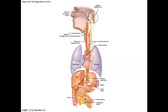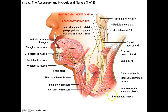Next is cranial nerve XI, the accessory nerve — called accessory because it's an accessory to the vagus. It arises from the spinal cord, comes up through the foramen magnum into the skull, and back out with the vagus nerve. It has many roots coming from the spinal cord. Since it comes from further down, it controls muscles that shrug the shoulders and move the neck: the trapezius, sternocleidomastoid, and muscles of the pharynx and larynx.